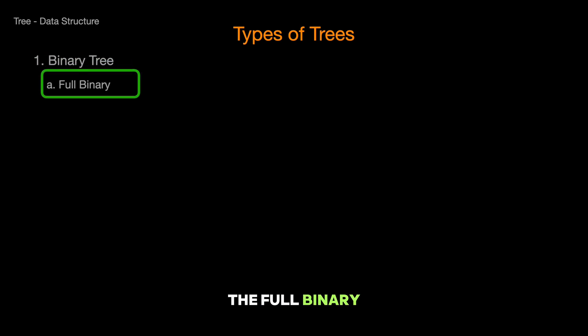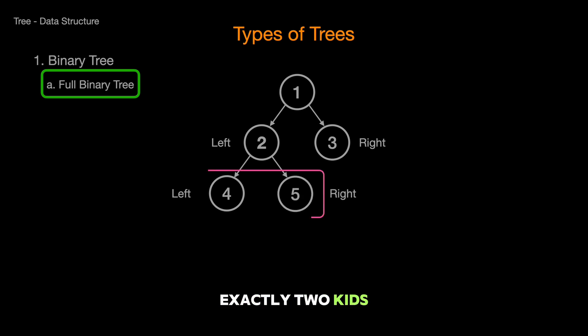First up is the full binary tree. This is the tree that doesn't believe in half measures. Every node has either two children or none at all. It's like a family where every couple decides to have exactly two kids or none.